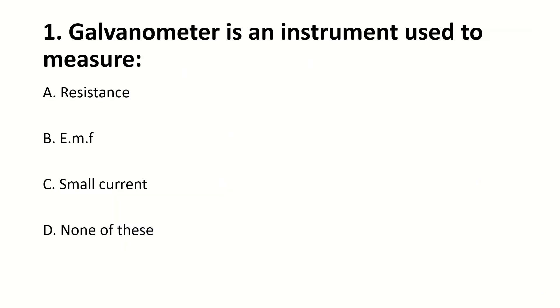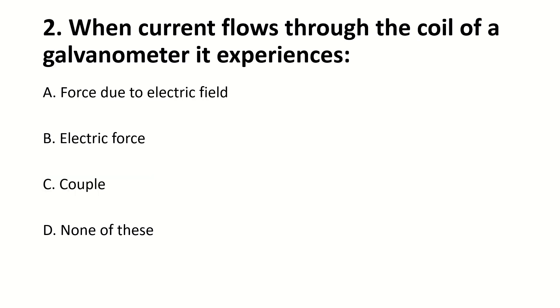Galvanometer is an instrument used to measure — blank. Right answer is C: small current. When current flows through the coil of a galvanometer, it experiences — blank. Right answer is C: a couple.